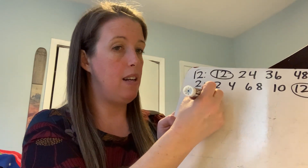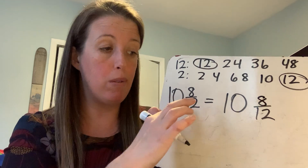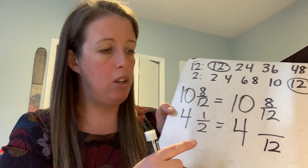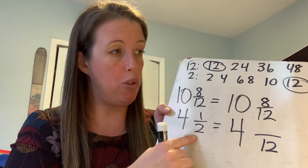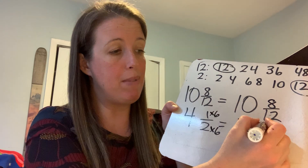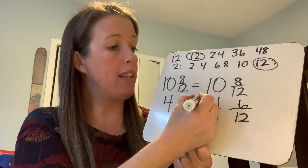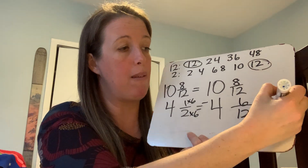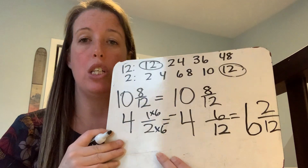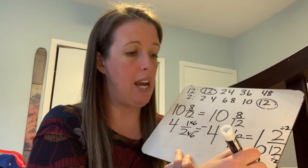I have ten and eight-twelfths — I want to change them both to twelfths. This one is already twelfths, so it stays exactly the same. Now for four and a half: I'm going to make an equivalent fraction using twelfths. What did I do to my halves to turn them into twelfths? Two times six — so I multiply my numerator by six: one times six is six. You should recognize that one-half and six-twelfths are equivalent. Time to subtract: eight-twelfths minus six-twelfths gives me two-twelfths. Ten wholes minus four wholes gives me six wholes. I have six and two-twelfths, but I can divide both by two to get six and one-sixth.